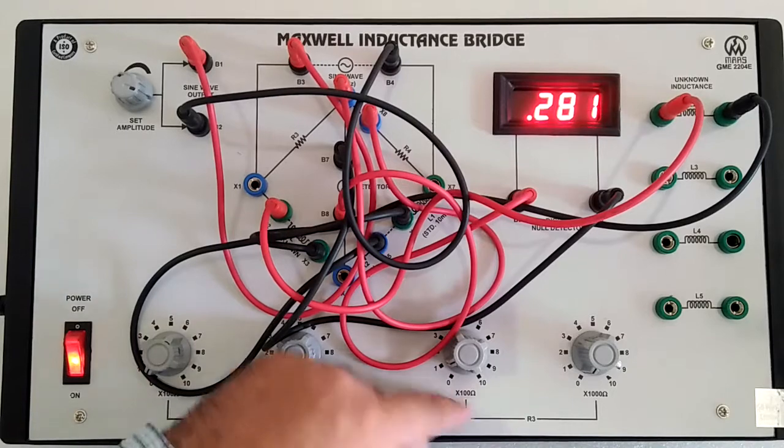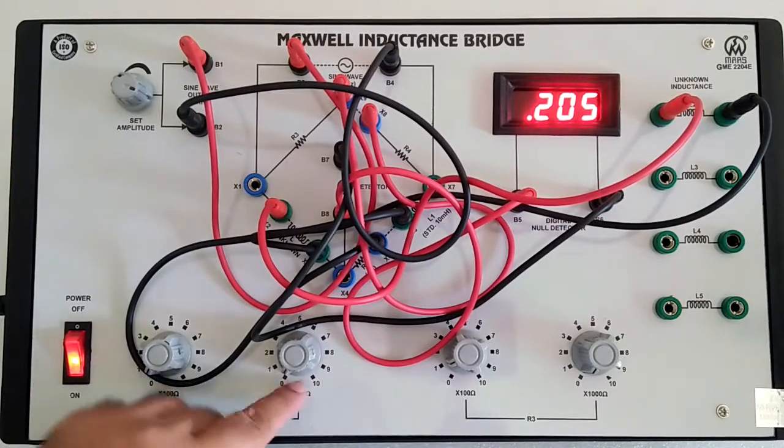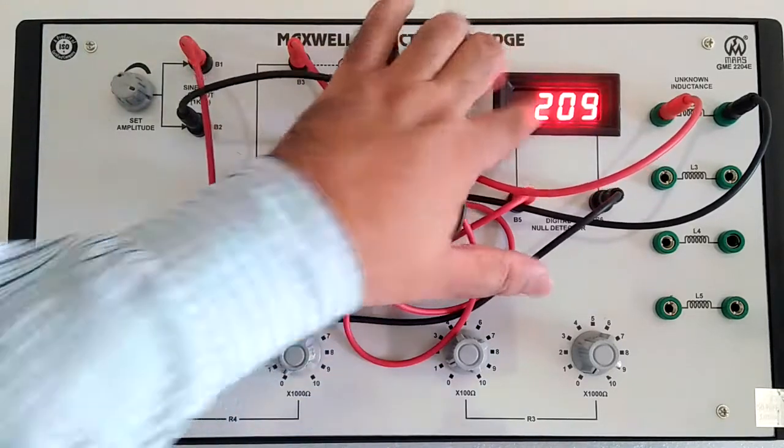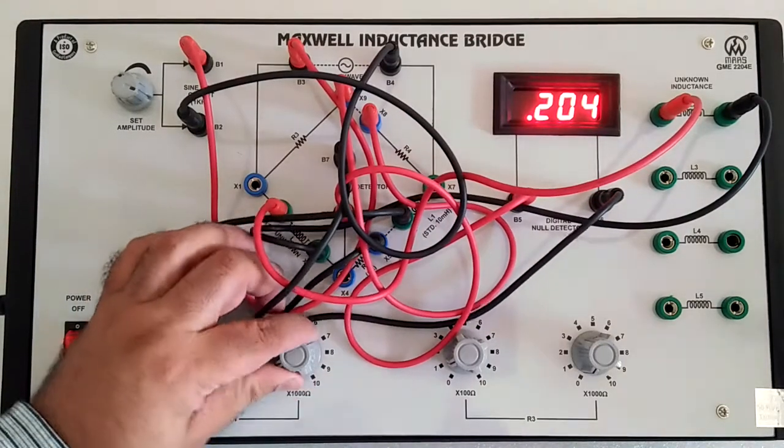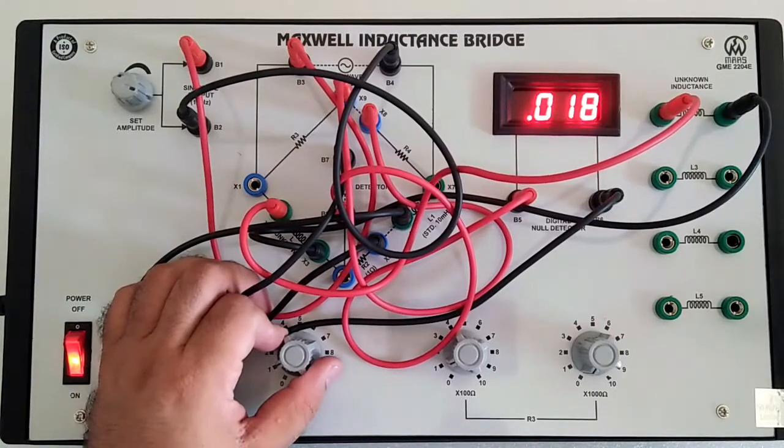Set R3 to any value. Suppose it is 100. Now change R4 to minimize the resonance here. Wait for some time because of the AC signal.